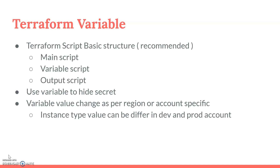Basically, a Terraform project is divided into three different sections. One is the main script where the main resources are going to be created. Another is the variable script where the variables are defined. And the third one is the output script where all your outputs are kept. This is not a Terraform-given recommendation, but an industry recommendation that we should use a certain structure. You can make your own structure — no issues — but this structure will be more easy and manageable in terms of Terraform execution.